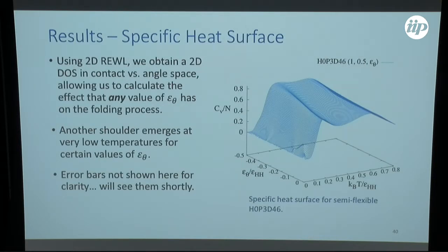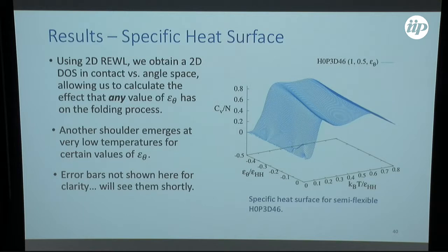For the angle interaction energy, instead of trying every possible interaction separately, we use two-dimensional Replica Exchange Wang-Landau sampling. We sample in terms of the contact energy as well as the number of angles, so if we know the contact energy and the number of angles we can reweight the energies for any angle energy times the number of angles. This allows us to find the impact the angle interaction has on the folding process for all values of the angle energy in a single simulation.